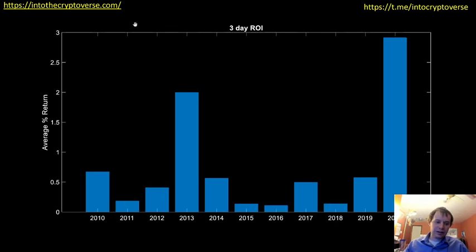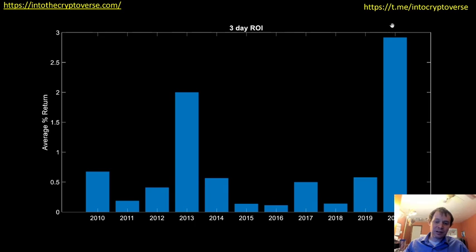We're also going to look at the average percentage return by year. Your three-day ROI on average, if you purchased any day during a given year and sold three days later — you can see 2013 where your average percent return would have been almost 2%, and so far in 2020, almost 3%. Most other years are more lackluster, but 2010, 2014, 2017, and 2019 also tended to be good years.